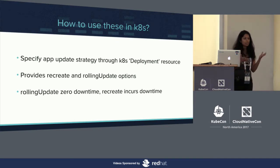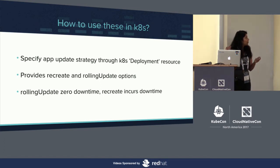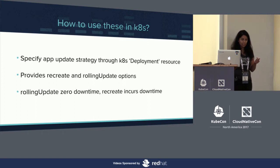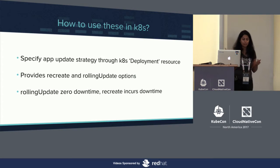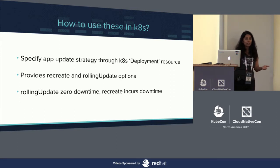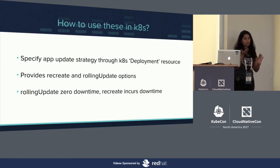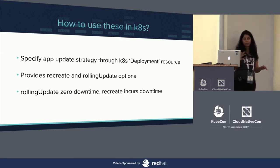So how do we use these strategies in our Kubernetes cluster? The deployment resource that we looked at earlier lets us specify one of these strategies. Right now it has two options: one for rolling update and one for recreate. For my app, I want to choose the rolling update option — not only does it guarantee zero downtime, but I just need to specify the rolling update option in my deployment resource YAML and Kubernetes will take care of the entire orchestration logic of that update. I won't have to do anything related to the implementation.